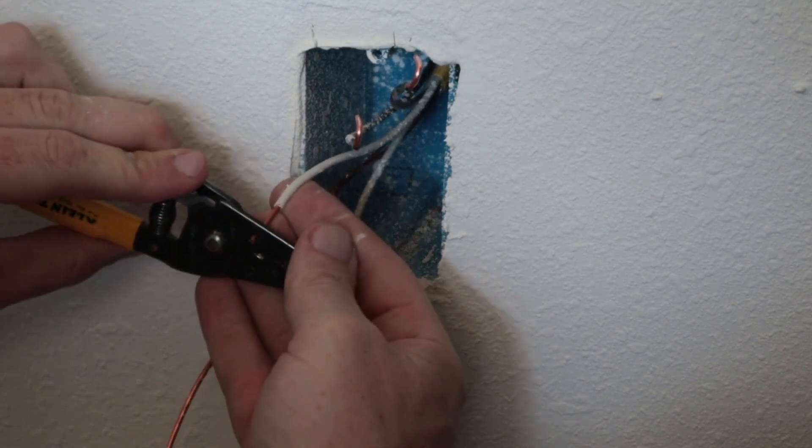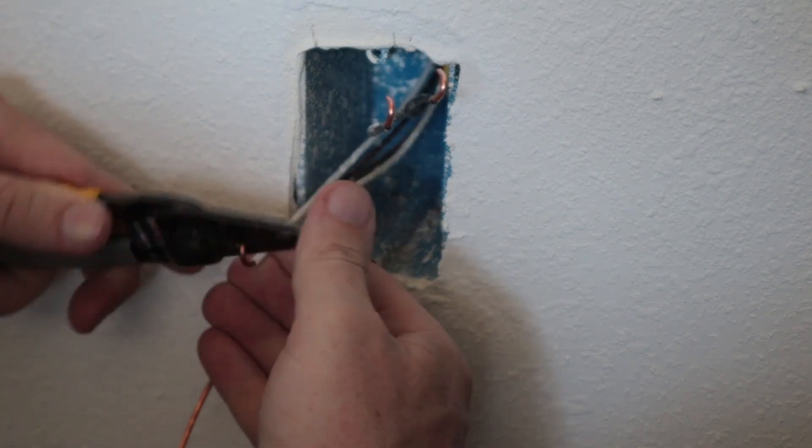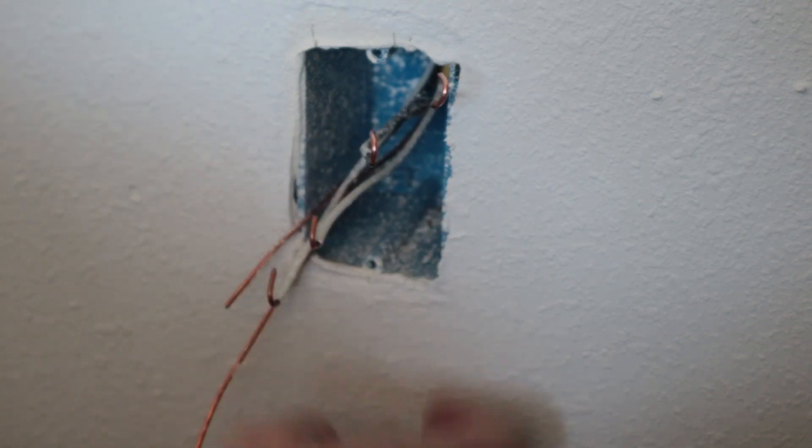So we'll do the same thing with these white ones. We'll just bend over the ends. I actually need to go grab a green wire nut for these.